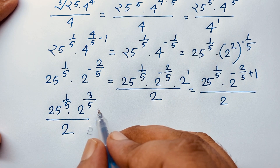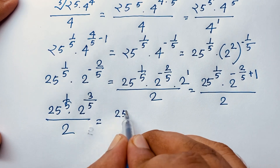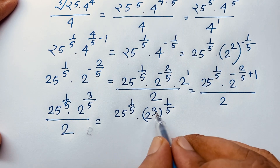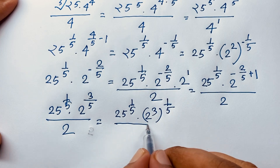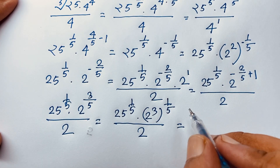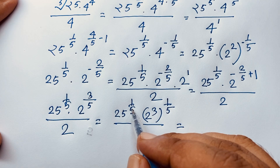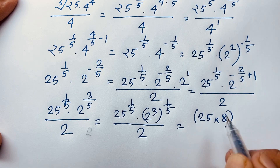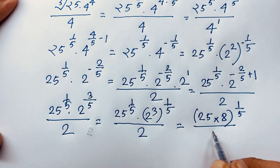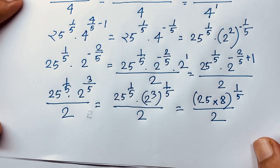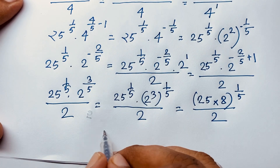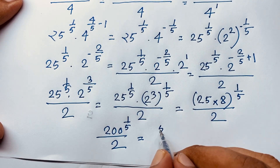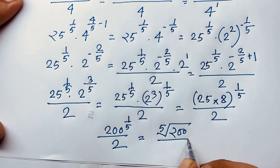Now at this moment: 25 to the power 1 over 5, times 2 to the power 3, in brackets with power 1 over 5. So 3 times 1 over 5 gives 3 over 5, over 2. Since this exponent and this exponent are the same, it will be 25 times 2 to the power 3 — that is 8 — with exponent 1 over 5, over 2. So 25 times 8 equals 200, and power is 1 over 5, over 2. Therefore it becomes 5th root of 200, over 2. This is our final answer to this math question.